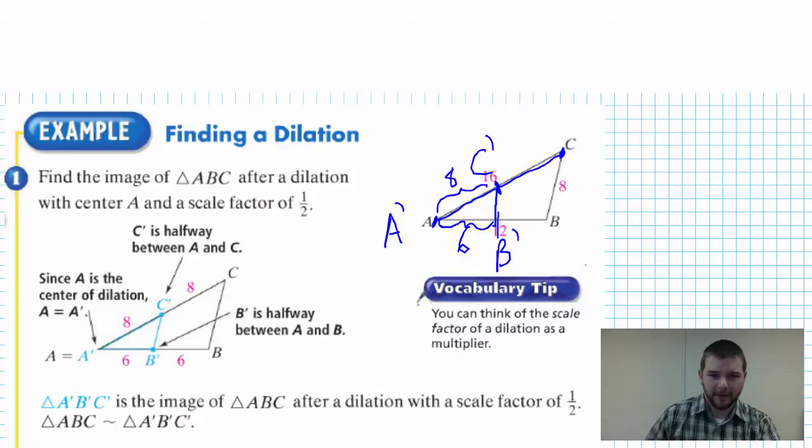We connect these to end up with a big mess, but embedded in that big mess is triangle A prime B prime C prime. If the distance from C to B was 8 units, the distance from C prime to B prime after our dilation of one-half is going to be half of 8 units or 4 units.